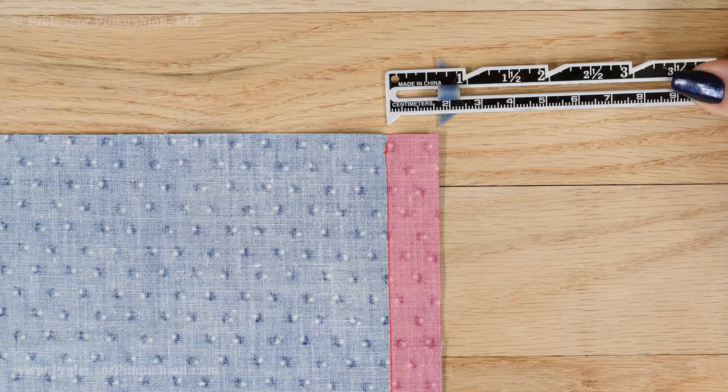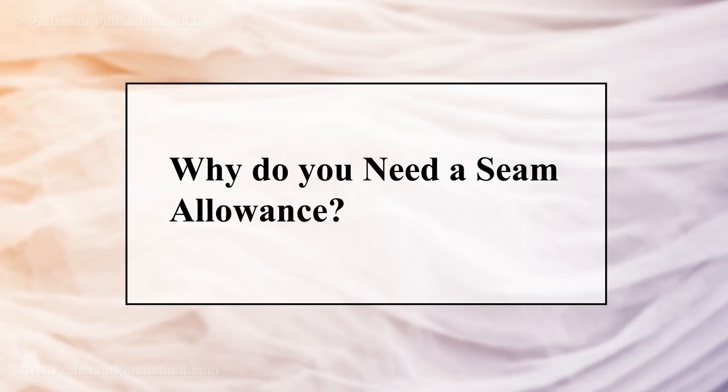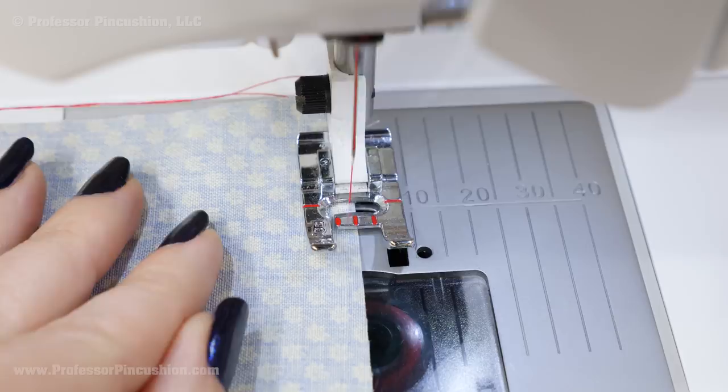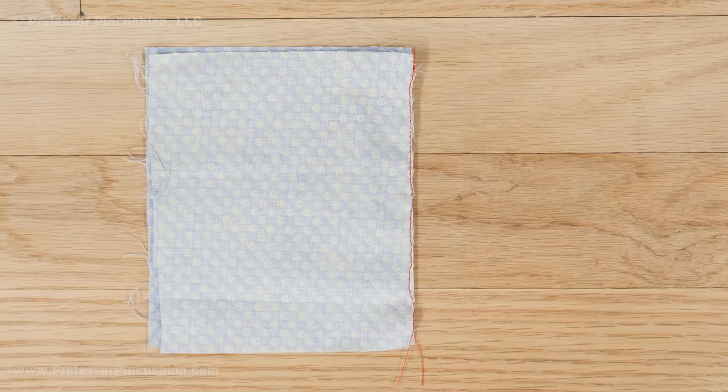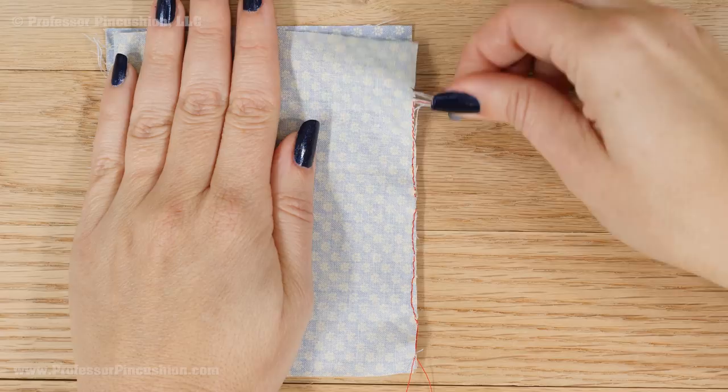But why do we even have a seam allowance? Why can't we just stitch directly on the edge of the fabric? There are a few reasons a seam allowance is important. First of all, it's not practical to sew on the edge of the fabric — it's not as easy as it looks. Maybe your two fabrics aren't lined up exactly, so you don't realize you're not catching the fabric in the back. Or, if you have a fabric that frays, you may eventually fray your stitch line right off.